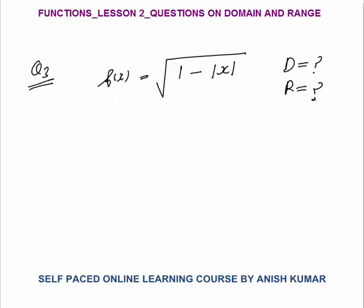Question 3 — you should try it yourself first, then look at how I have solved it. Every student please first try this question and find the domain and range of this function, then look at the solution. Now the domain is the set of input for which the output is a real number. We know that 1 minus mod x should be greater than or equal to 0, otherwise the square root of a negative number is not defined.